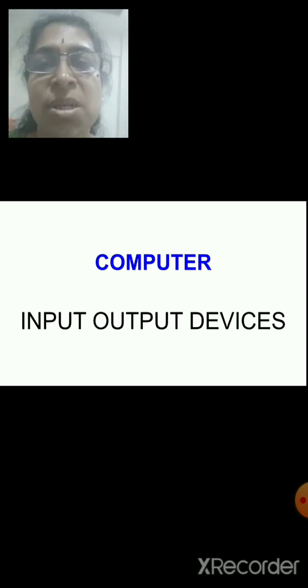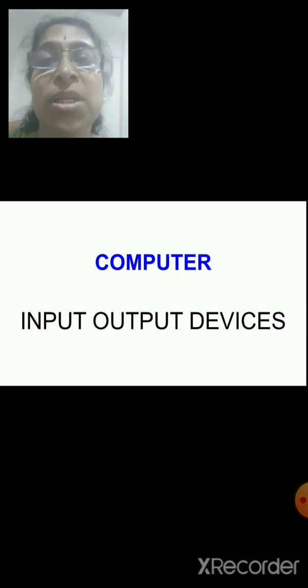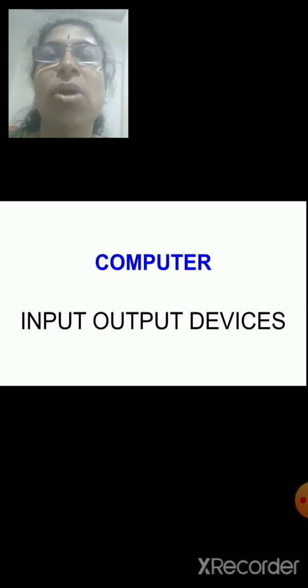You have also learned how a computer works. A computer works basically in three parts — three functions: that is input, process, and output. Now what is input, what is output, what is process — all that we are going to learn. Through which we give input, those are called input devices; and where we get the result, those are called output devices. All this we are going to learn in detail.